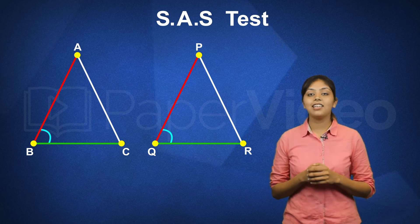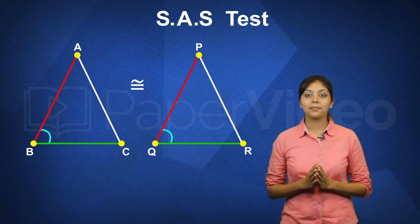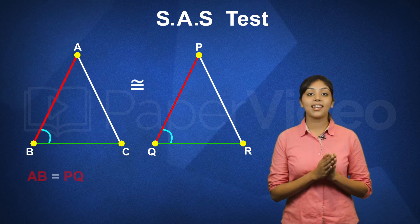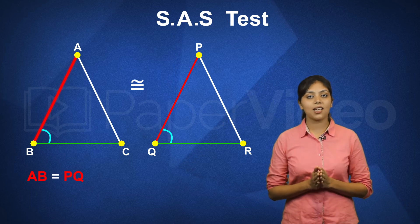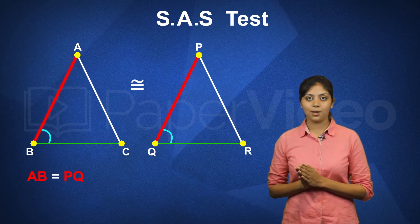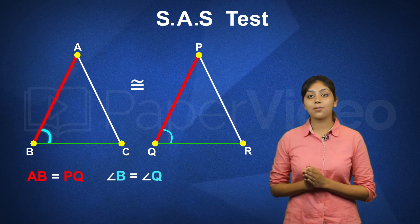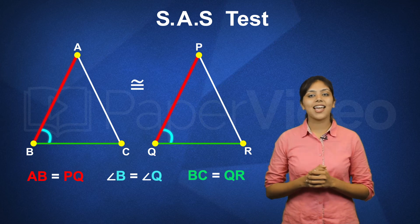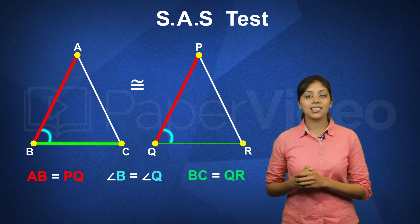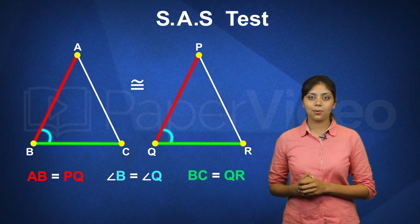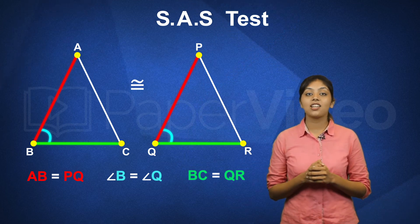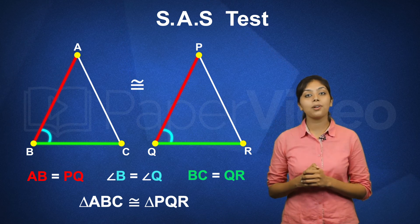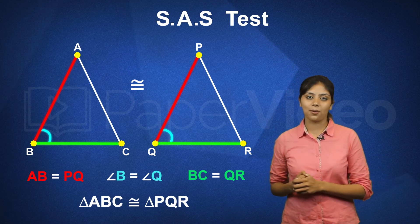then the triangles are congruent. This means that if Side AB is equal to Side PQ, Angle B is equal to Angle Q, and Side BC is equal to Side QR, then we can say that triangle ABC is congruent to triangle PQR.